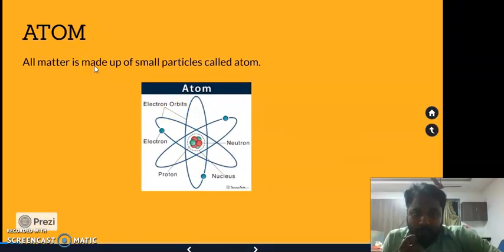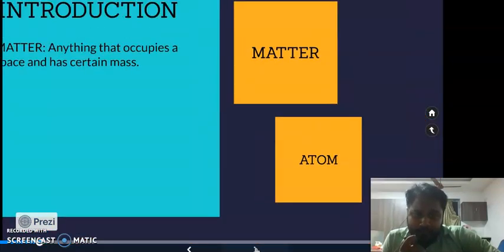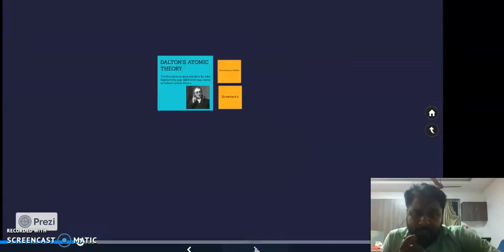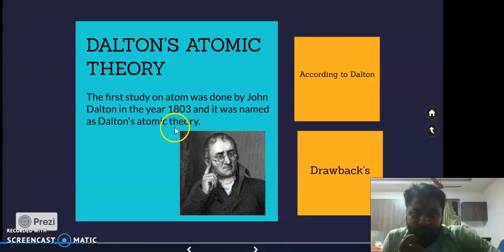The atom is actually the building part of any matter. Many scientists have tried to study the structure of atoms, and the scientist who first studied atoms is Dalton. Dalton's atomic theory was developed in 1803, when he first studied the structure of atoms.